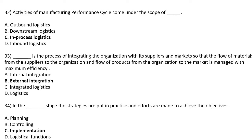DASH is the process of integrating the organization with its suppliers and market so that the flow of material from the suppliers to the organization and the flow of products from the organization to the market is managed with maximum efficiency — Option A: Internal Integration, Option B: External Integration, Option C: Integrated Logistic, Option D: Logistic. The correct answer is Option B: External Integration.